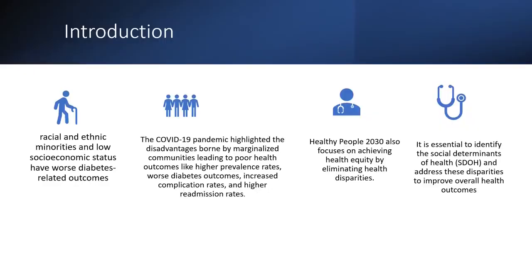Literature shows that racial and ethnic minorities and people with low socioeconomic status have worse diabetes-related outcomes. This was more highlighted during COVID-19, when the disadvantage borne by marginalized communities led to poor health outcomes like higher prevalence of diabetes, increased complication rates, and higher readmission rates.